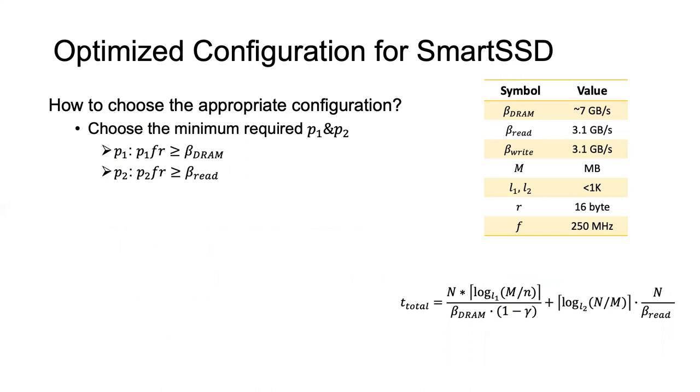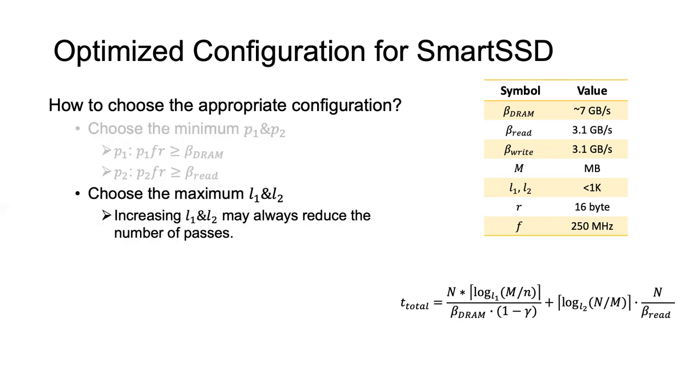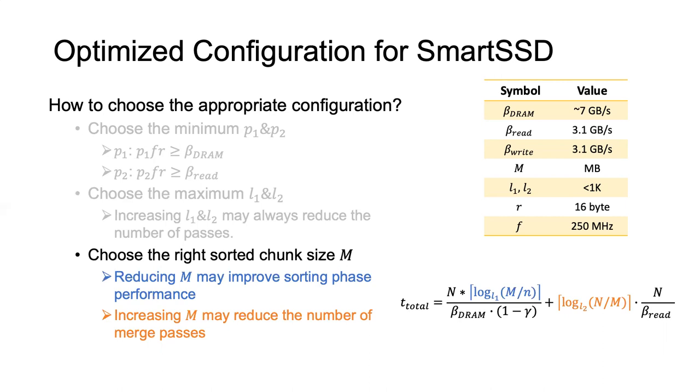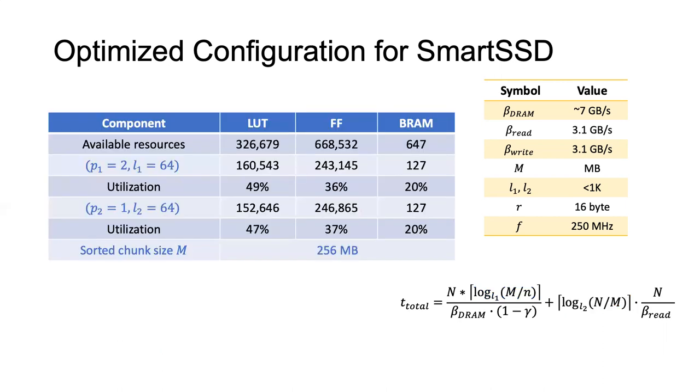So how to choose the right configuration for Smart SSD? First, we need to choose the minimum required p1 and p2. For example, in the sorting phase we only need to choose the minimum p1 that saturates the DRAM bandwidth. After that, we maximize the choice of L1 and L2 because increasing L1 and L2 may always reduce the number of passes. Finally, we also need to choose the right sorted chunk size big M because reducing M may reduce the sorting performance in the sorting phase. On the other hand, increasing M may reduce the number of merged passes in the merging phase. By solving the equations with the real constraints, we derived an optimized configuration for Smart SSD when sorting 16-byte elements. In the sorting phase we have a p equals 2, L equals 64 tree. In the merging phase we have another p equals 1, L equals 64 tree. We also choose the sorted chunk size M to be 256 megabytes.